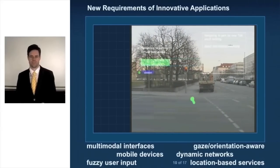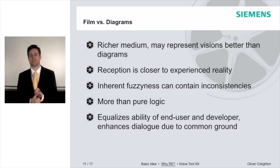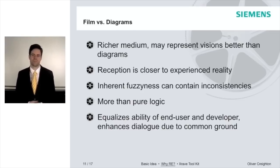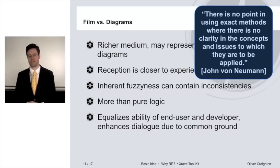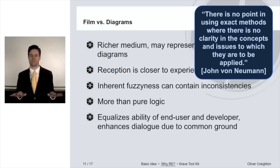How do we specify and develop such innovative applications? And why not simply use another graphical notation for the conceptual models? We think films represent concepts in rich detail — you see a lot more context and surrounding information that might be relevant. The reception of a film is much closer to the experience of reality, as you've seen in the example. A film is also much more forgiving of inconsistencies and cannot be reduced to poor logic, which is very good for initial models in a development process. Requirements developers know there is no sense in being precise when you don't know what you're talking about. And last but not least, a film can establish common ground between the end user — a non-technical person — and the developers, so the ability to understand the vision is equally distributed among all stakeholders.